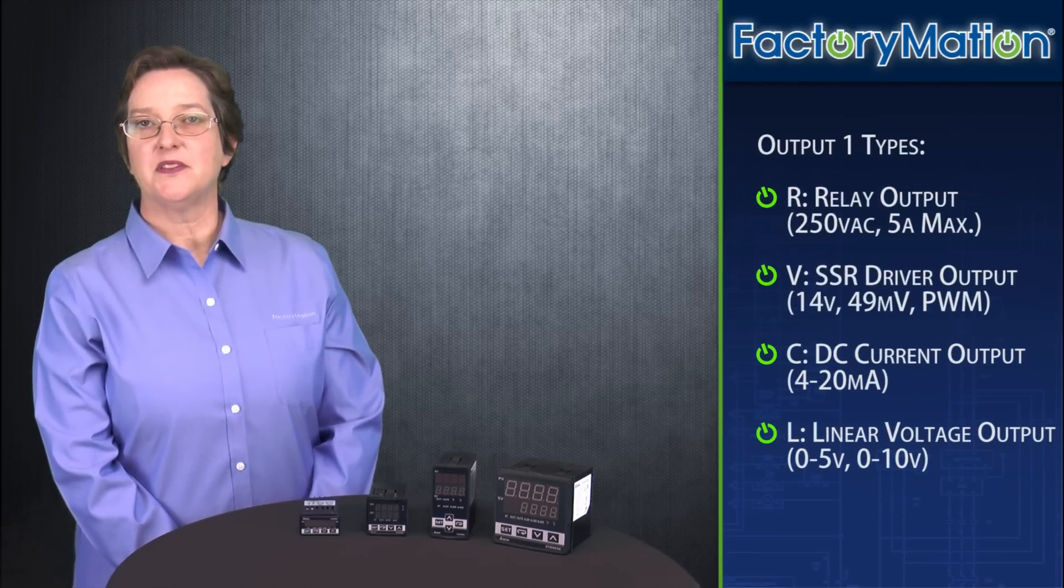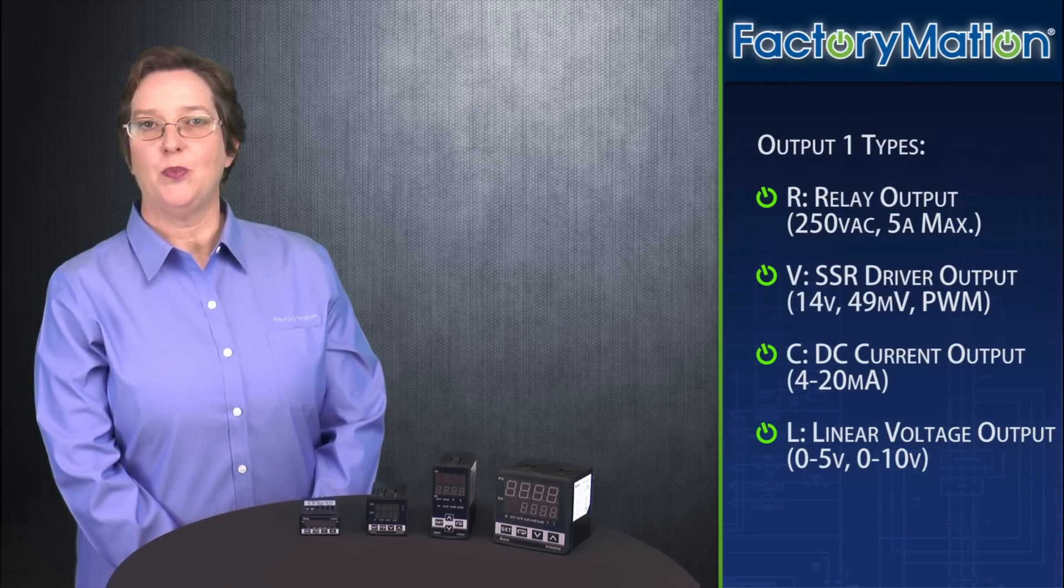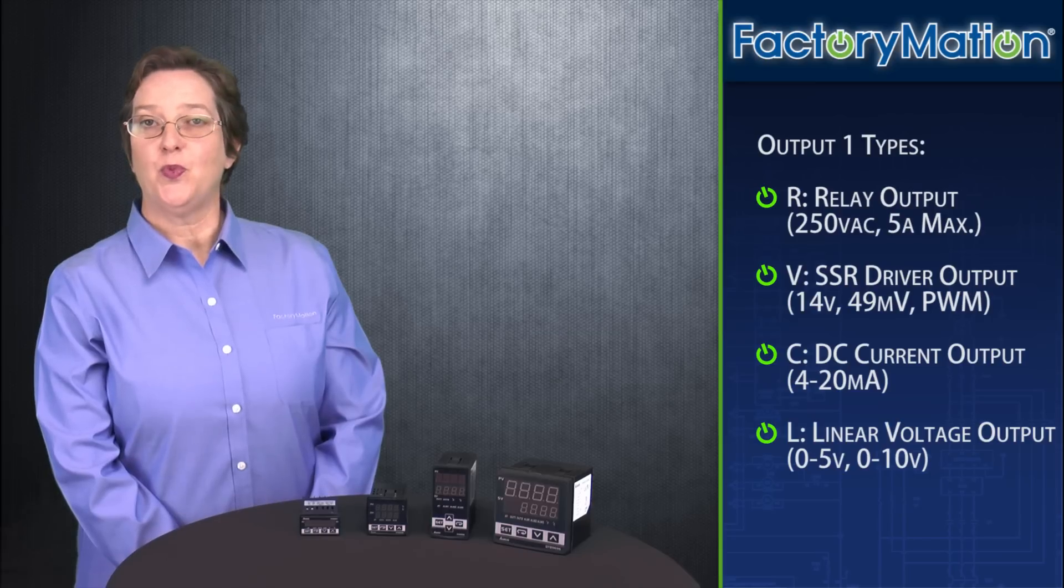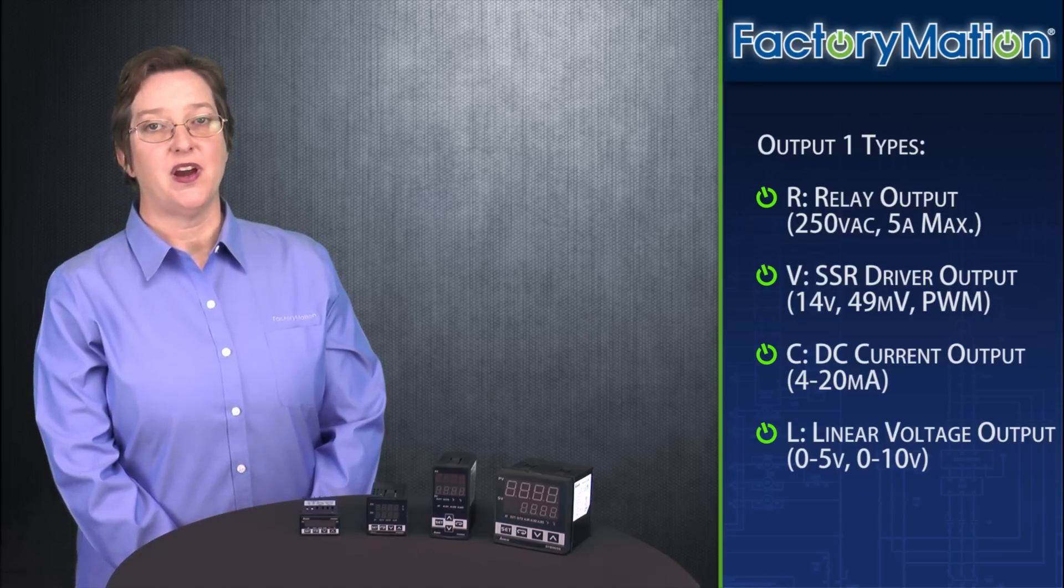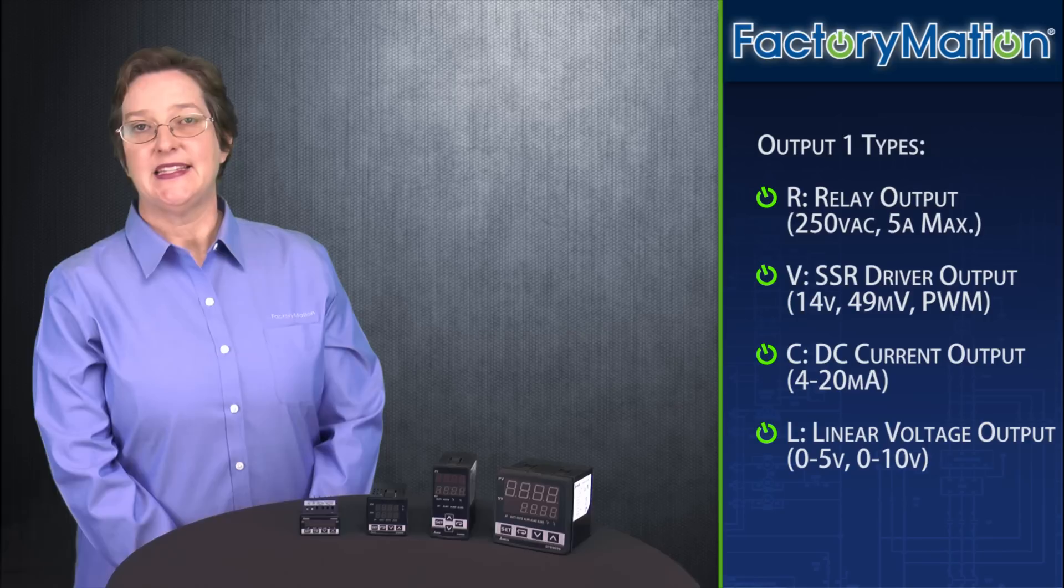The DTB models can be selected with the following output types. For output 1, you can have a relay output, SSR driver output, DC current output, or a linear voltage output.